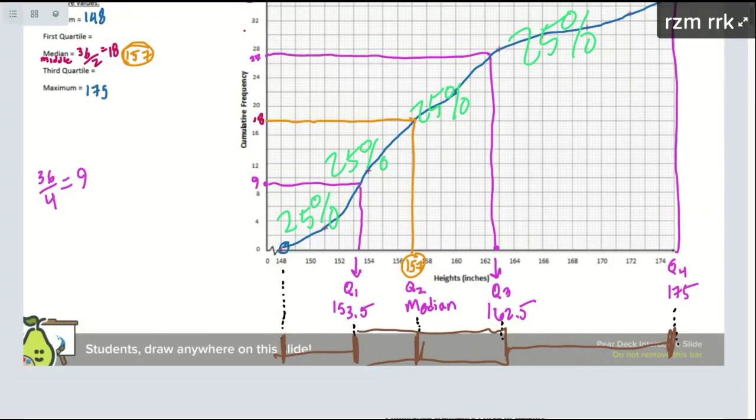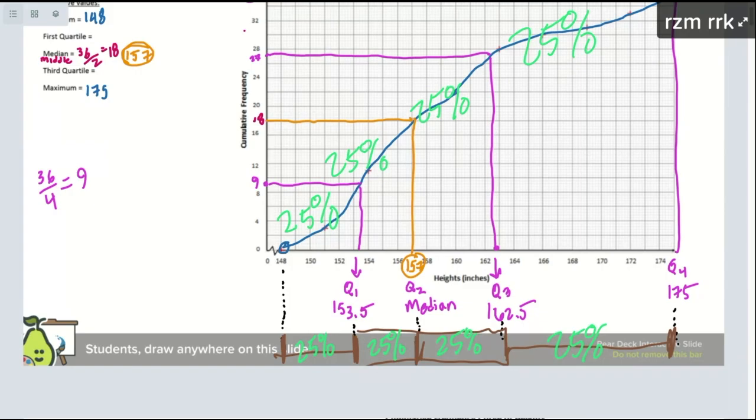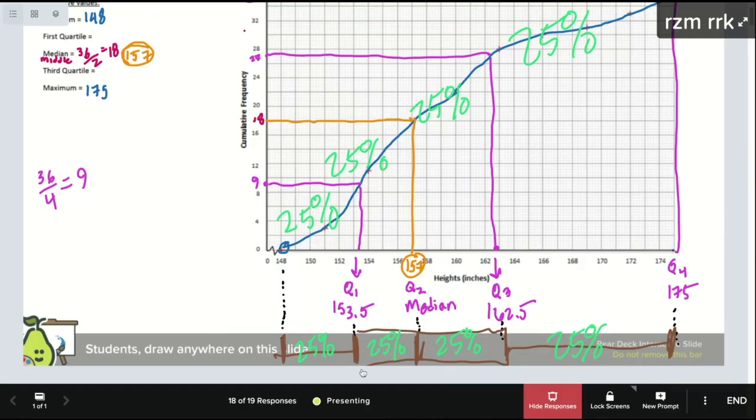Remember, this is 25% of your data here. This is 25%. This is 25%. And then this is also 25%. So you might get a question that says, hey, where's the 75th percentile? Oh, you just count up. 25 plus 25 plus 25. That's 75%. Oh, that's right here. 50th percentile is your median right here. 25th percentile, go up 25%, it's right here.